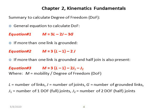To sum up the discussion of previous slides, I have concluded all three equations in this single slide. Equation number one represents the classical Grubler's equation. Any mechanism which has only one fixed or grounded link can use equation number one, which is m equal to 3l minus 2j minus 3g.